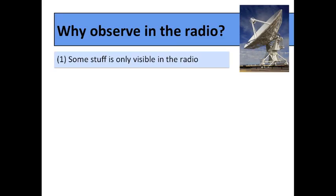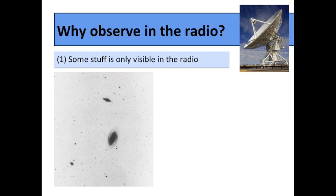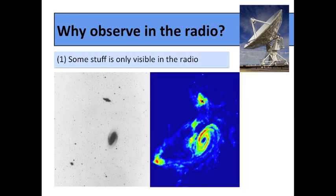So I've already made one of my points, that looking in the radio opens a window to an otherwise invisible universe. Another example. This is an optical image of the M81 group, a group of galaxies in the Big Dipper. This is the same image in the radio. You get more information.